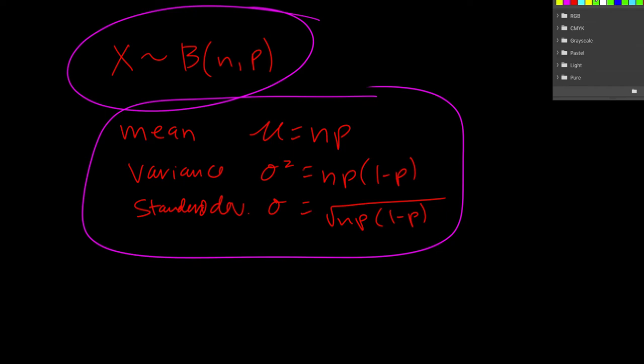So it says a fair die is rolled 12 times, and x is the number of sixes that resulted. Find the mean, variance, and standard deviation of x.